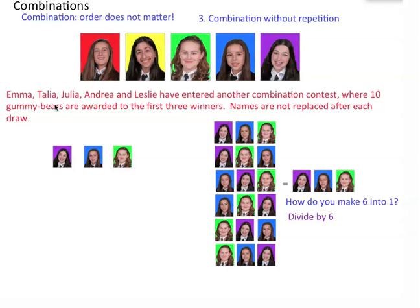We have five possibilities for the first position. For the second position, we already have chosen one person, so we have only four. For the third, we have three. So five times four times three — that gives us a permutation — and we're going to divide that by the number of ways of writing these three people, which is six. That gives us sixty divided by six, which is ten. There are only ten outcomes.